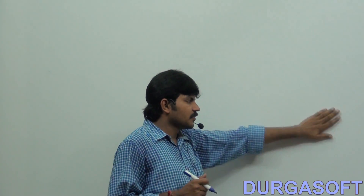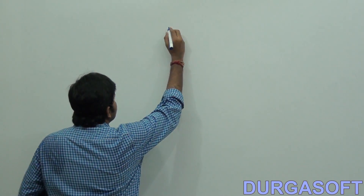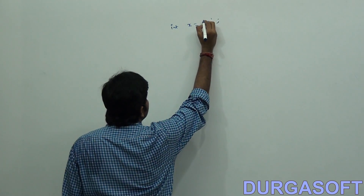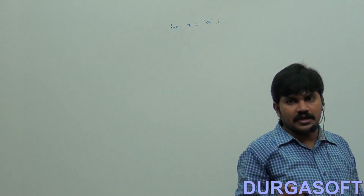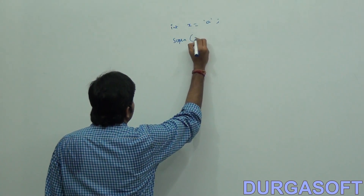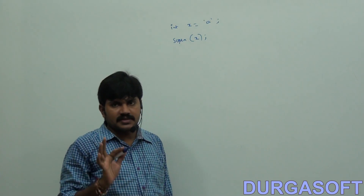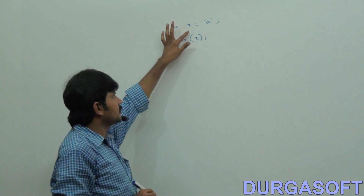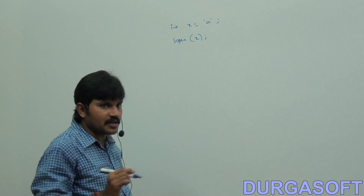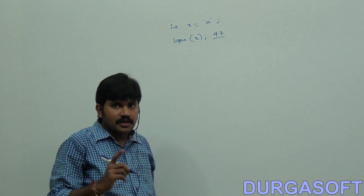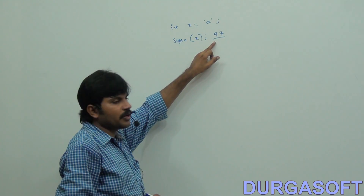In implicit typecasting, suppose I am taking: int x = 'a'; and System.out.println(x). Can you tell what output we will get? We will get 97. But actually we provided a char — 'a' — but I am getting the output as 97.